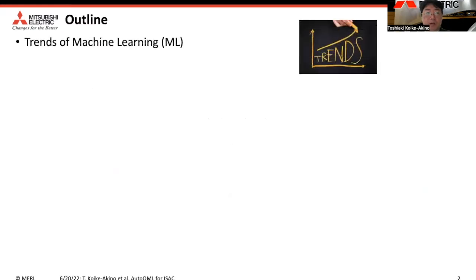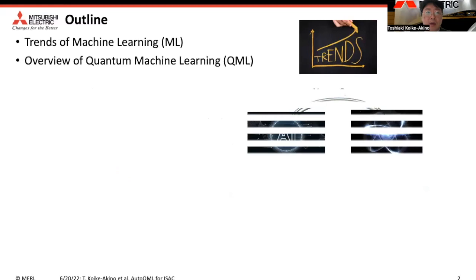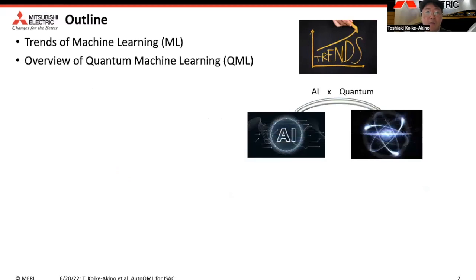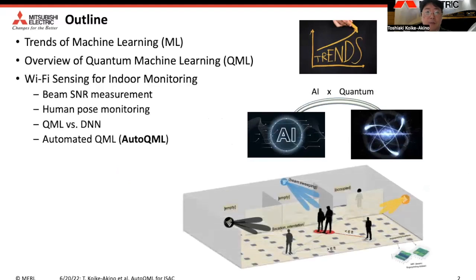First I'd like to talk about the trends of machine learning. Then I'm going to give you an overview of quantum machine learning, QML. Then we will show the application of QML for Wi-Fi sensing to monitor indoor environments. Specifically, we propose automated QML, which can predict human pose using Wi-Fi beam SNR measurements. And finally, I'm going to conclude the talk.